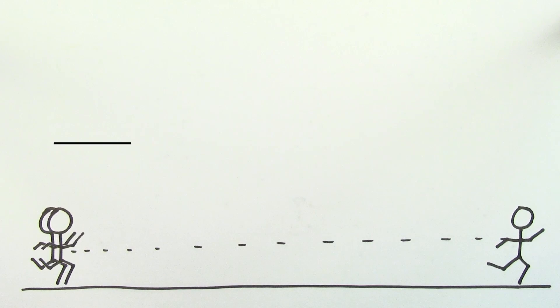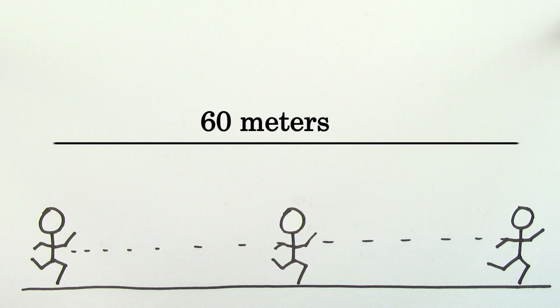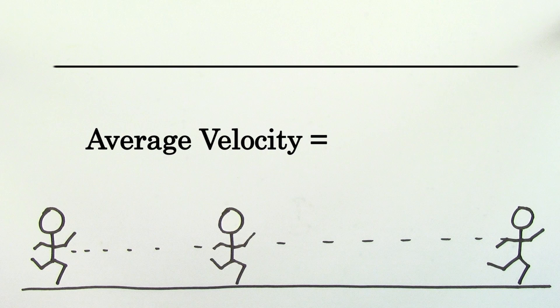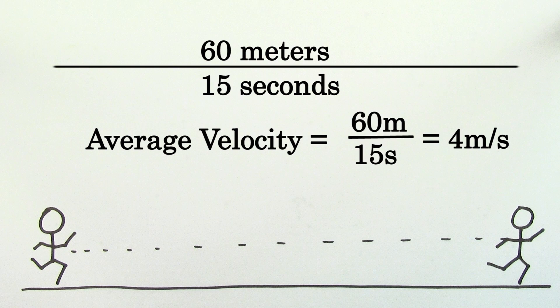In other words, let's say you jogged 60 meters in a time of 15 seconds. During this time, you were speeding up and slowing down and changing your speed at every moment. Regardless of the speeding up or slowing down that took place during this path, your average velocity is still just going to be 4 meters per second to the right, or positive 4 meters per second.